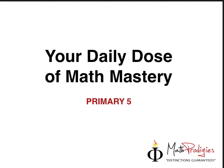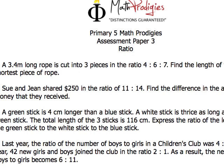So the first question, let's go straight into it. The first question is a great illustration of what ratio is. It says a 3.4 meter long rope is cut into 3 pieces in the ratio 4 is to 6 is to 7. Find the length of the shortest piece of rope.